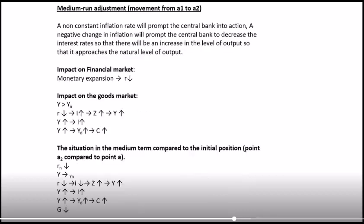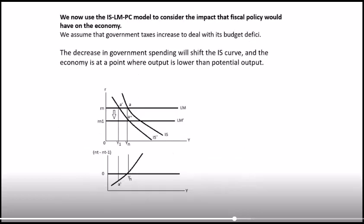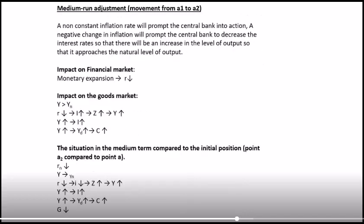The output gap is negative and inflation will decrease. Moving on to the medium-run adjustment from A1 to A2: the economy moves down the IS curve from A1 to A2, returning to YN — the natural rate of output. A non-constant inflation rate — specifically the negative change in inflation — will prompt the central bank to act.